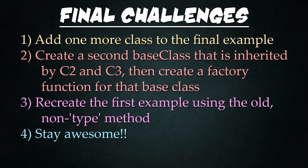To recap: we created a base class, created check functions for the subclasses to determine which one should be instantiated, defined the factory to iterate through subclasses and return the matching one, and created two instances. Thank you so much for watching — great job keeping up. Definitely take a few minutes to investigate these final challenges. Leave a comment below if this helped, and please subscribe to my channel.